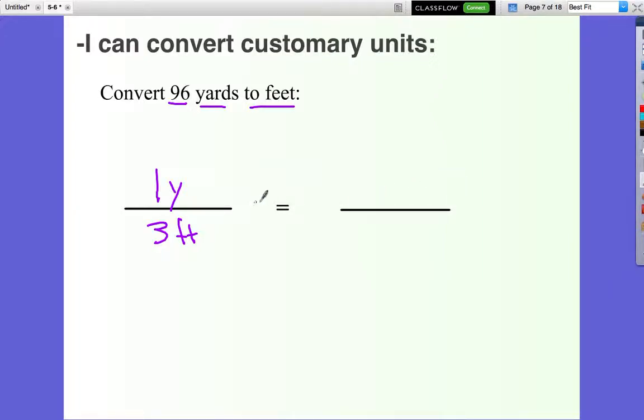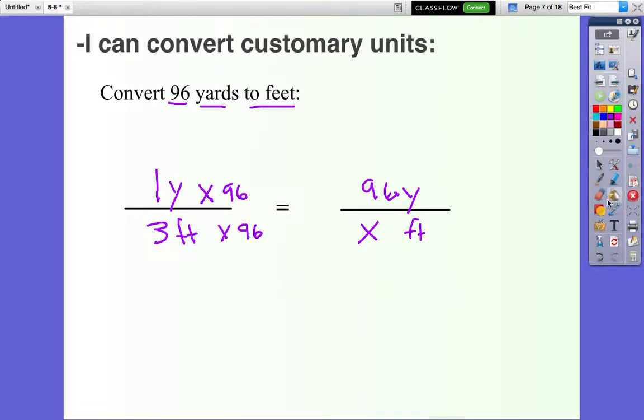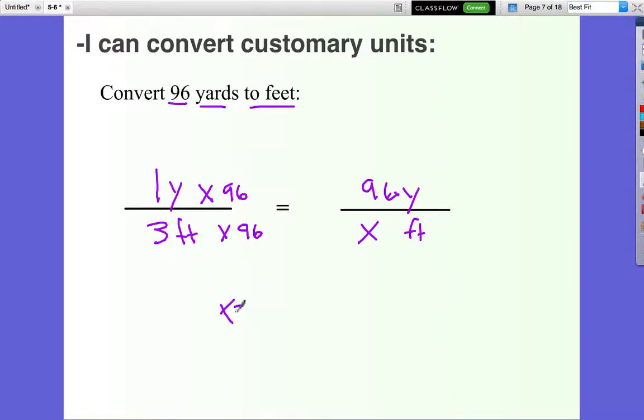So 96 yards to feet. One times 96 equals that, so do the same thing down there. Three times 96, put that into a calculator. Three times 96 is 288. There's your answer.